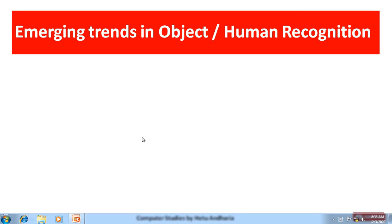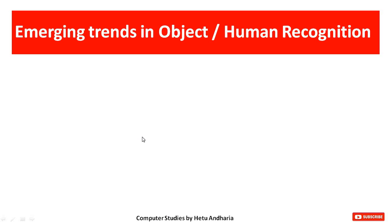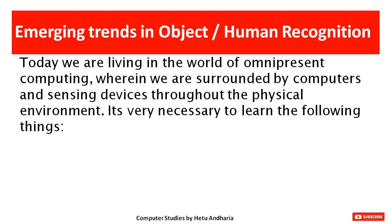This is a very interesting topic on emerging trends in object or human recognition. Today we are living in the world of omnipresent computing, meaning computers are directly or indirectly present everywhere. We are surrounded by computers and sensing devices throughout the physical environment. Computers does not just mean the laptop or personal computer, but all devices working with the help of a computer — even a mobile phone is a type of computer.